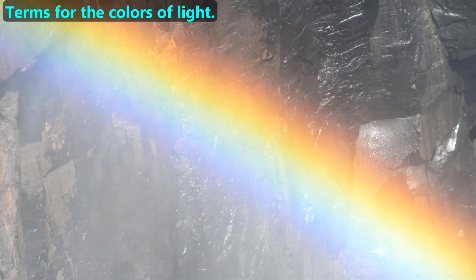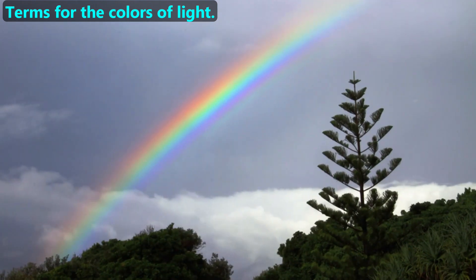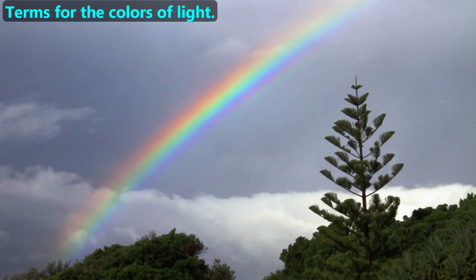First, let's discuss the terms for the colors of light. This rainbow shows very vivid and distinct colors of light, including red, orange, yellow, green, blue, and violet.